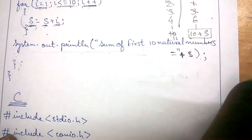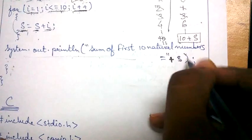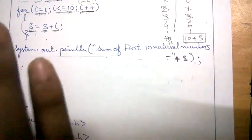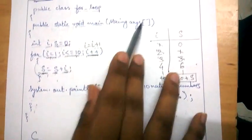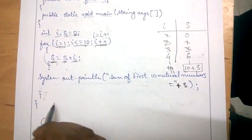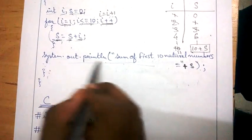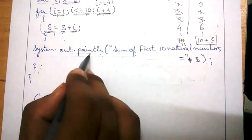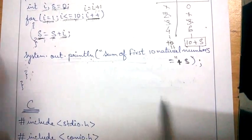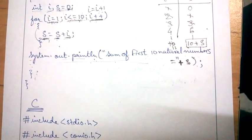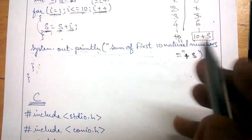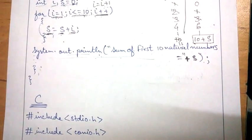We close the bracket and put a semicolon. Remember that a semicolon comes after every statement except the class declaration and the for loop line. My program will print this particular statement and then move the cursor to the next line, and then proceed to the next step.